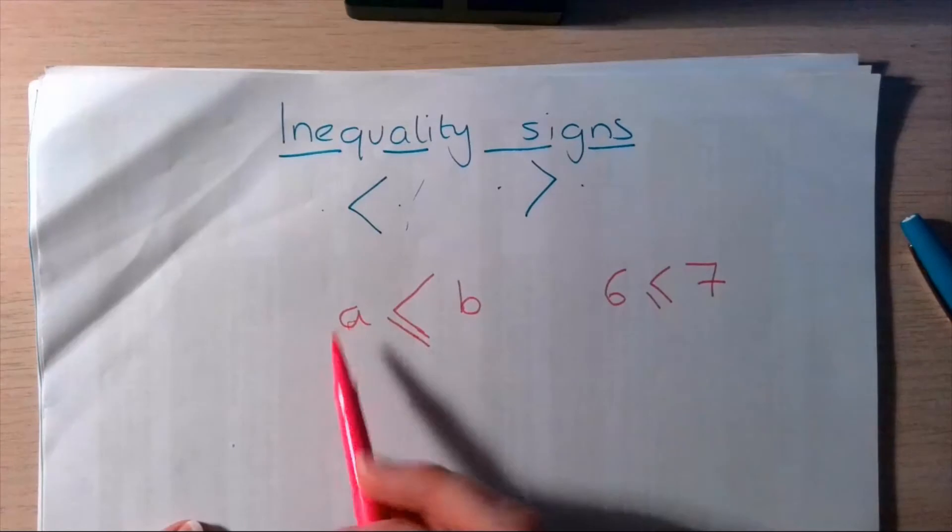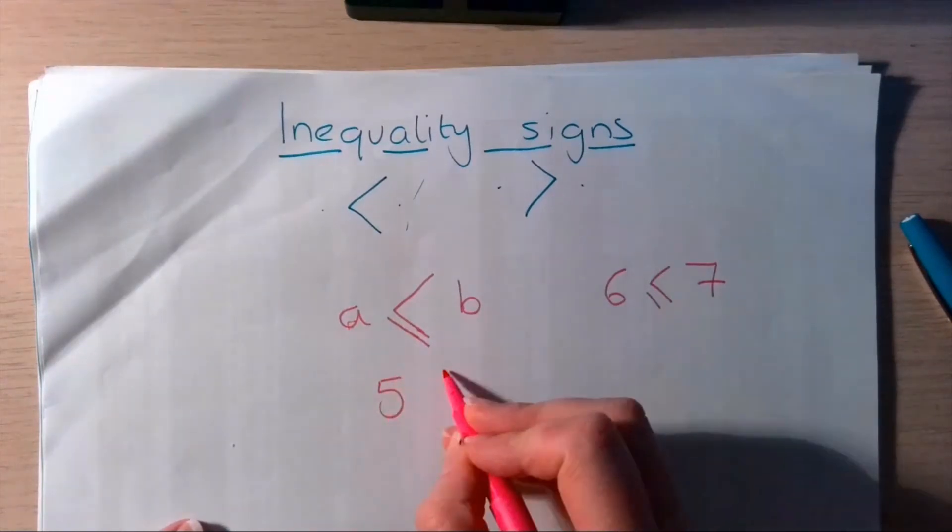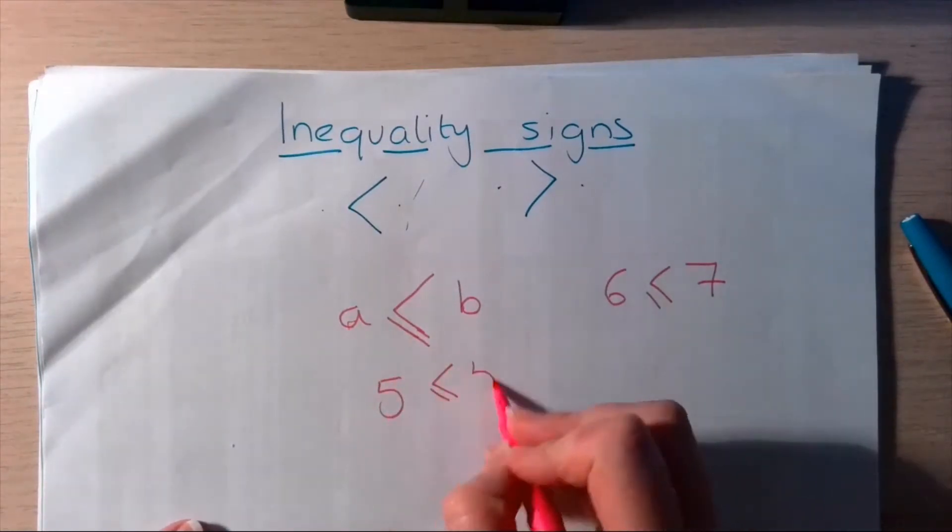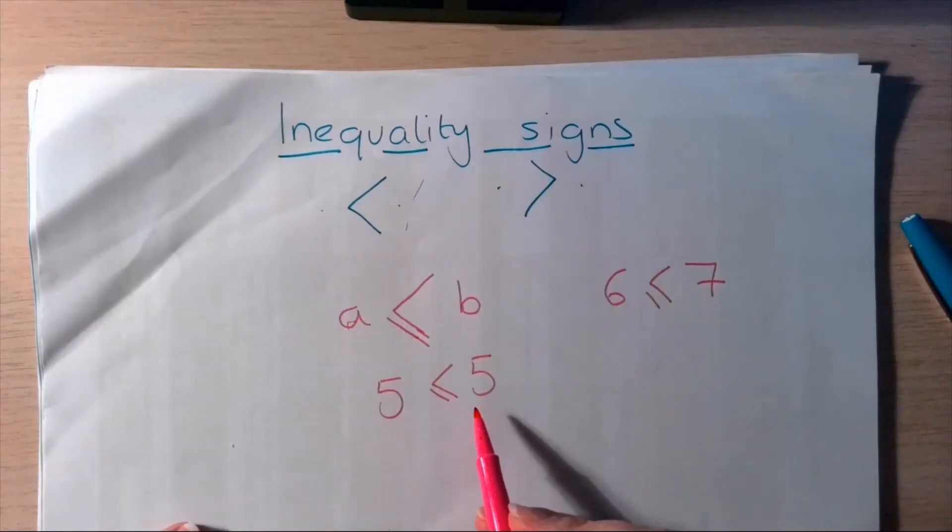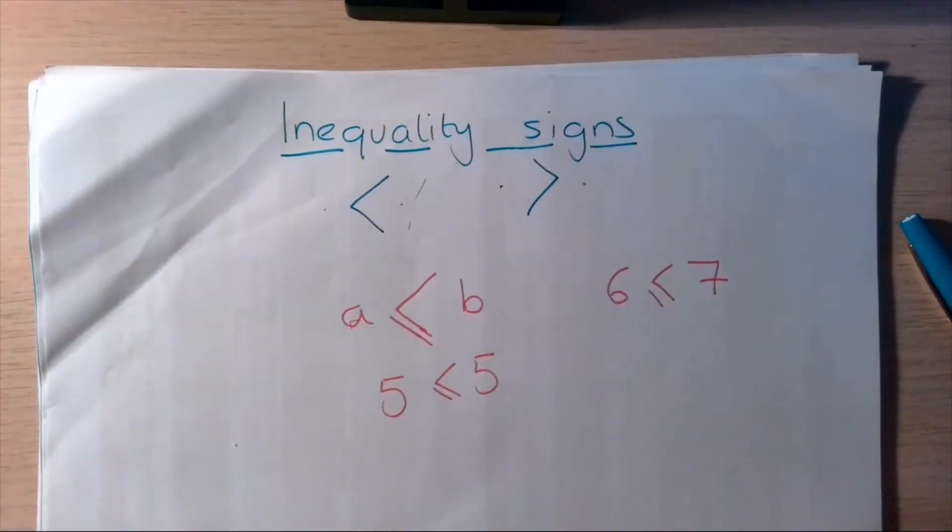So, these numbers could actually be the same. We could have 5 is less than or equal to 5. It could be 5. Now, you might think, well, what on earth is the point in doing that?